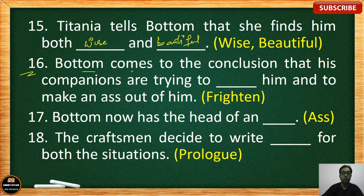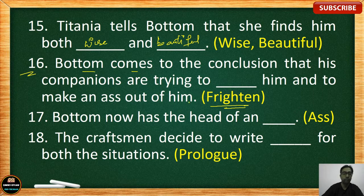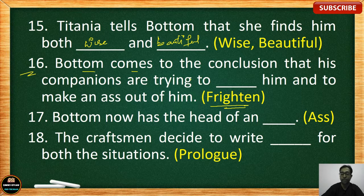Number 16: Bottom comes to the conclusion that his companions are trying to blank him and to make an ass out of him — the correct answer is 'frighten.' You know that Bottom has the head of a donkey, and he tries to figure out that maybe his companions are trying to make him afraid, which is why he draws this conclusion.